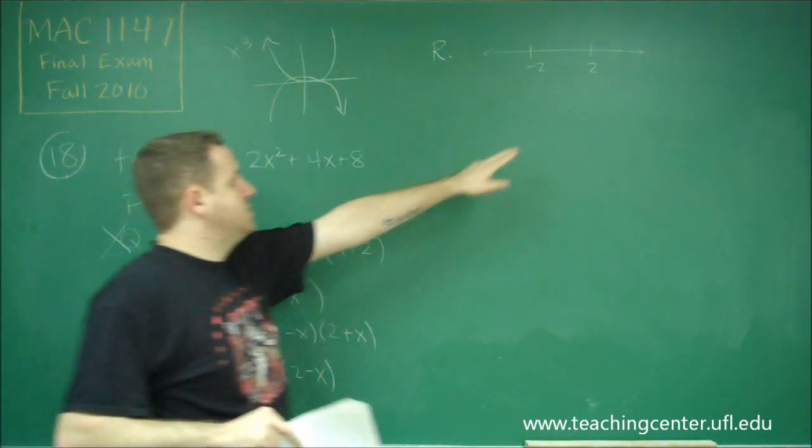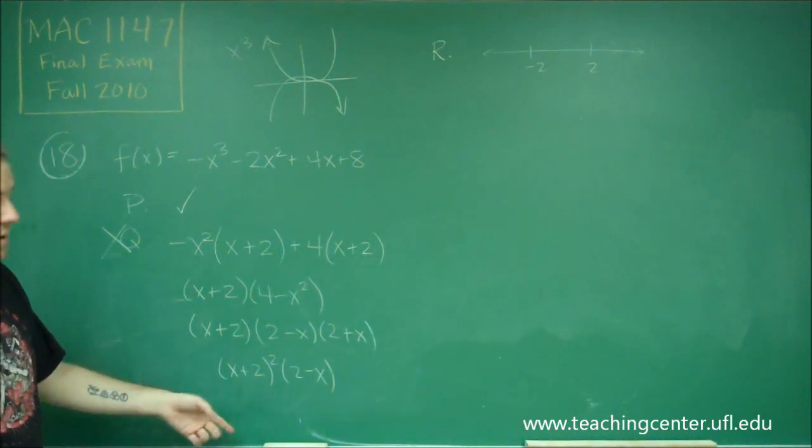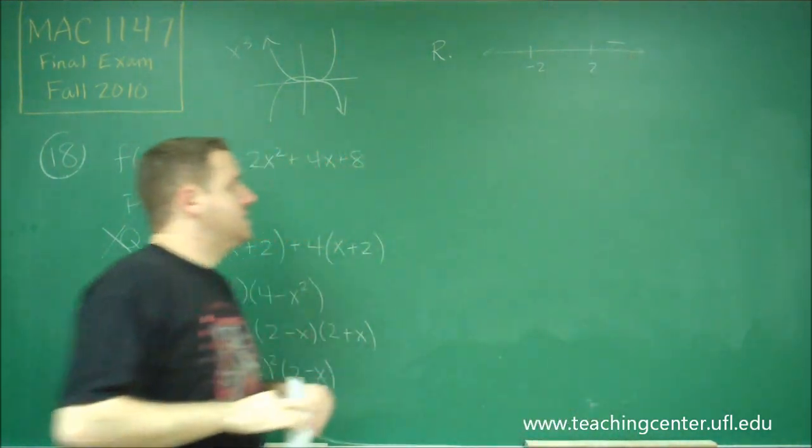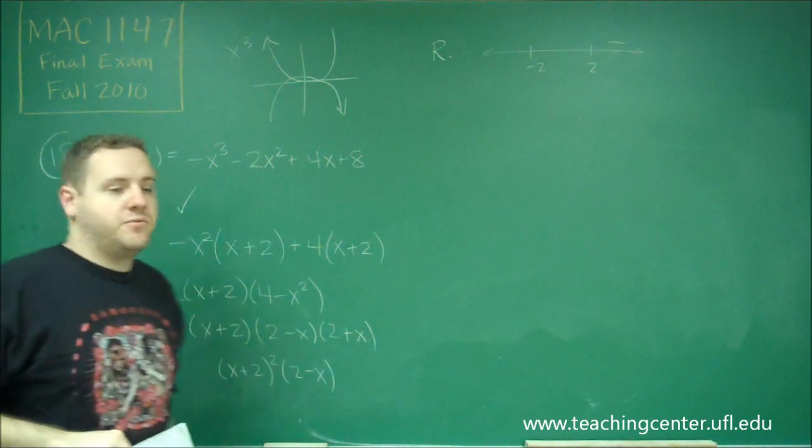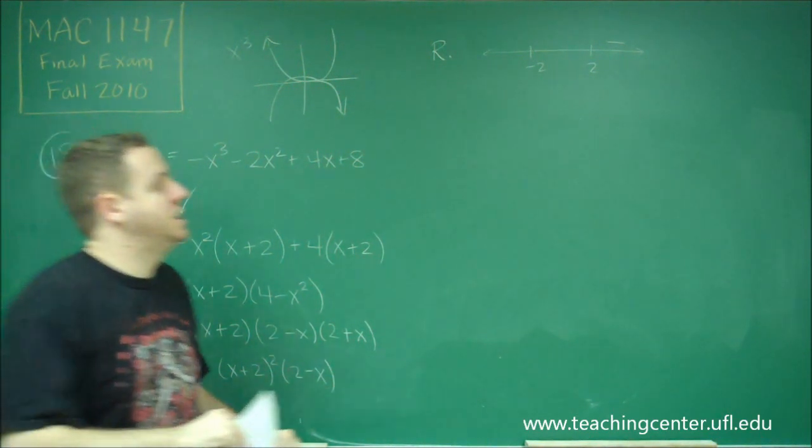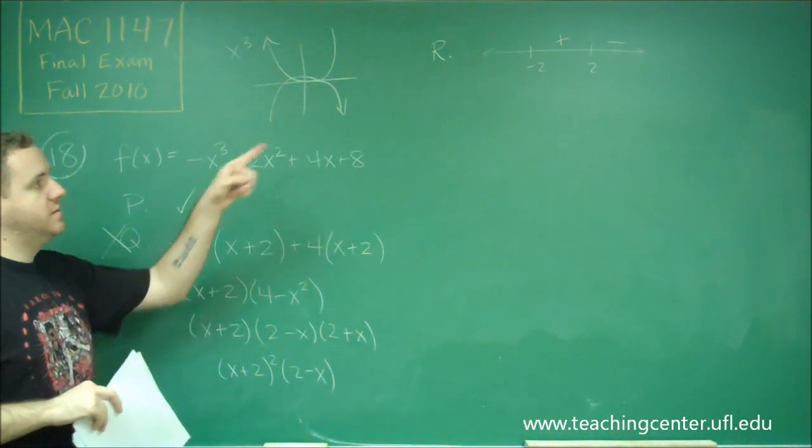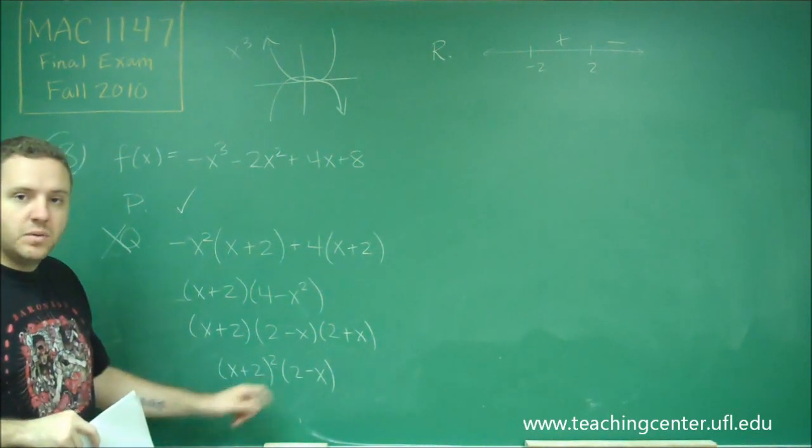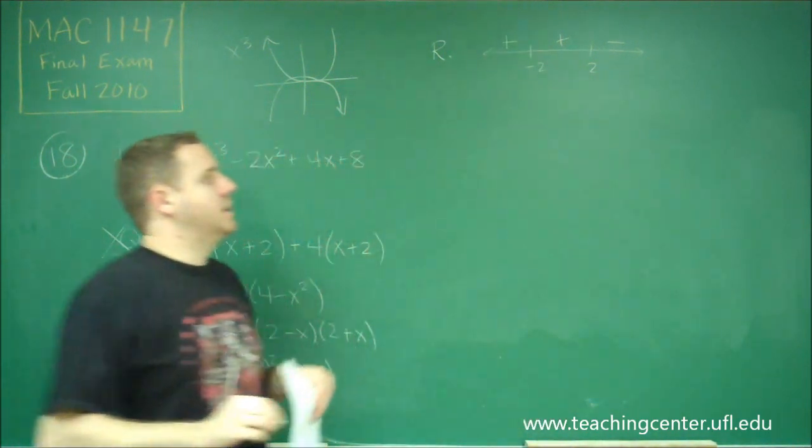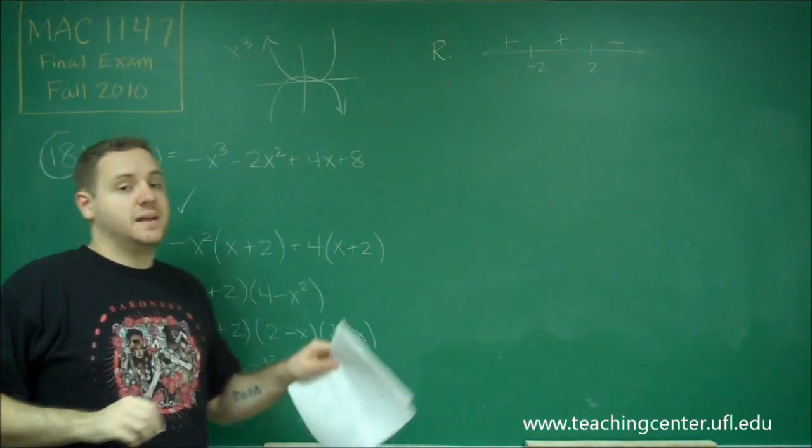Let's just do our sign chart to see if it's positive or negative. If we have a number bigger than 2, let's say 3, this is going to be positive because it's squared. That would be negative. So here we have negative. Since our number 2 is coming from something that has an odd multiplicity, we know that the sign has to change. So that should be positive. And since our negative 2 came from a factor that has an even multiplicity, we know that sign should stay the same. So we get that it's above the axis on negative infinity to negative 2 and negative 2 to 2.